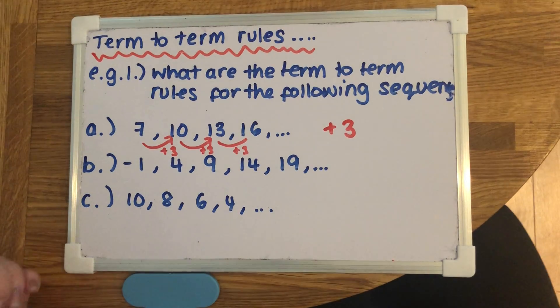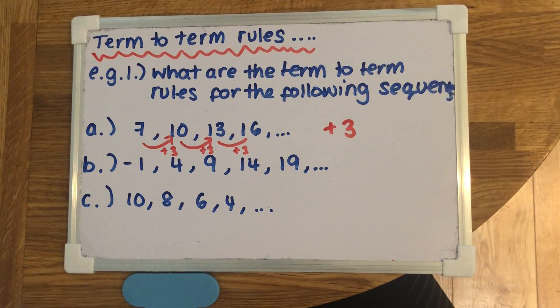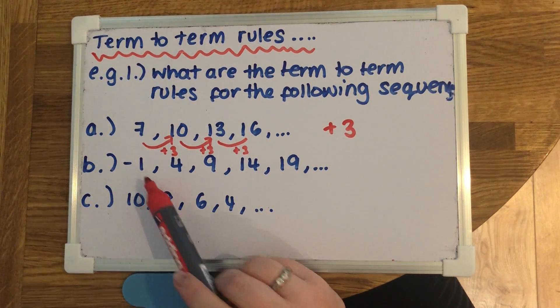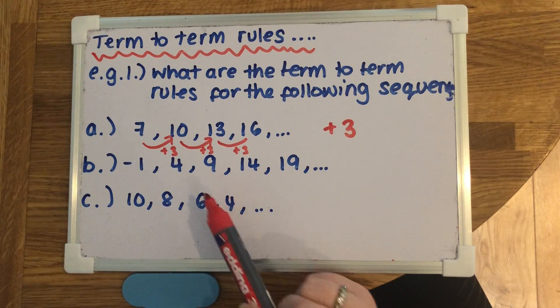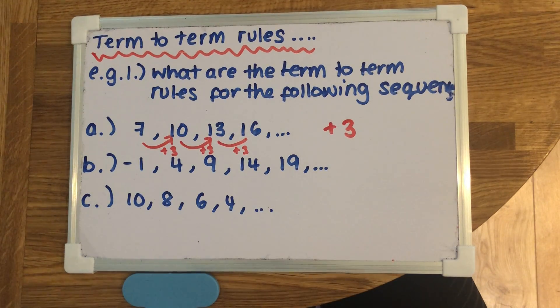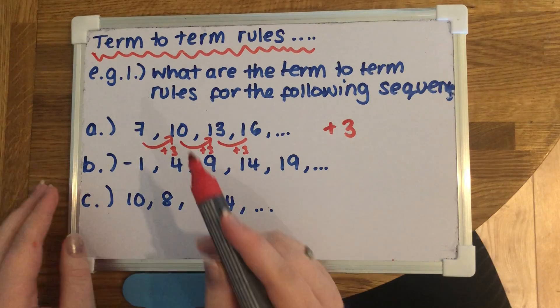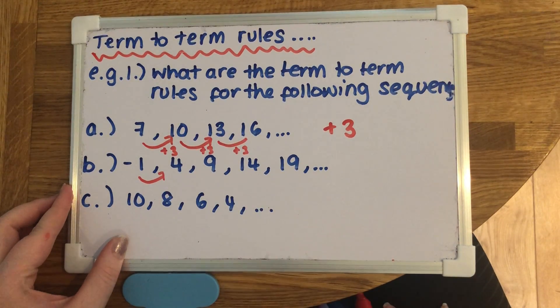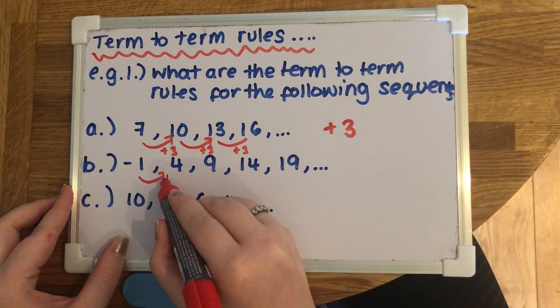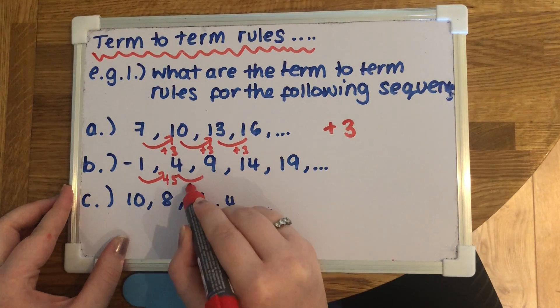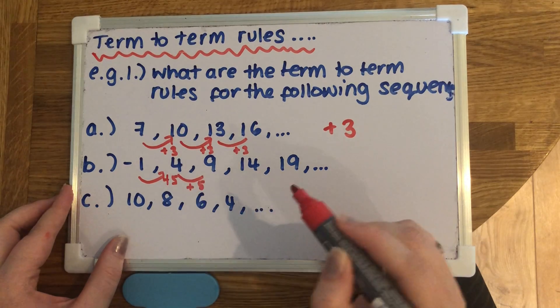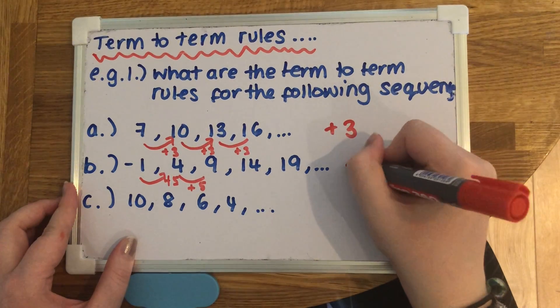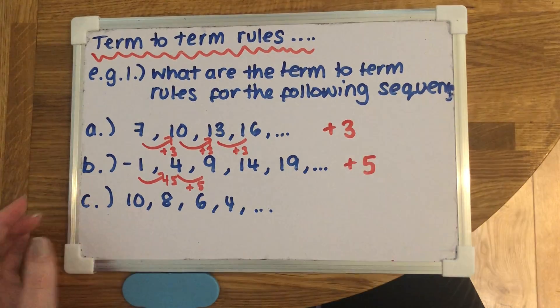If we look at the next one, we've got negative 1, then 4, then 9, 14, 19. Again, look at the first two, so think what we need to add to negative 1 to get to 4. We'd have to add 5. Check that it works for the other ones, so you'd add 5 to 4 to get 9 and so on. So this one would be add 5.